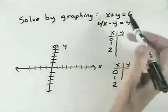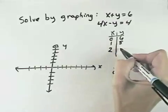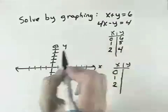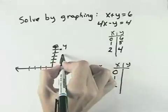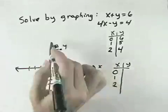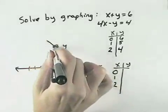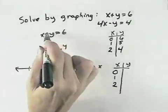If I let x equal 0 in the first equation, y equals 6. If x is 1, y is 5. If x is 2, y is 4. So I've got the points (0,6), (1,5), (2,4), and I'll draw my line through those points. For my first equation, x plus y equals 6.